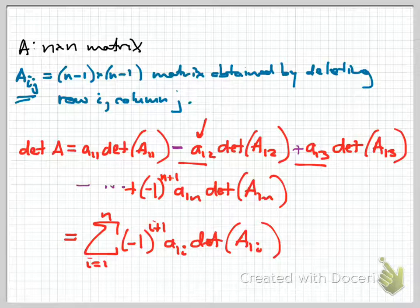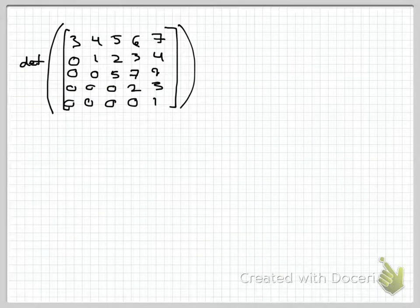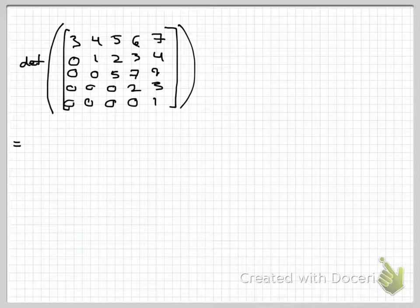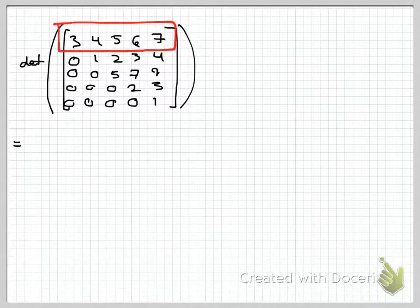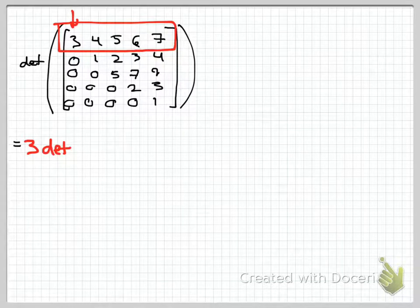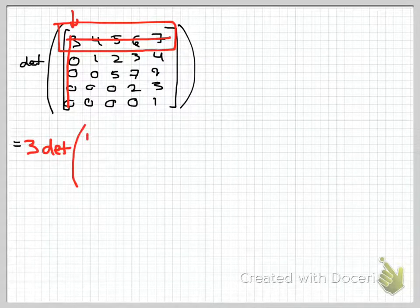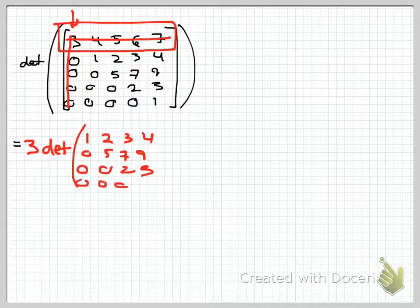Let's put this into practice. I have a 5 by 5 set up here, and we're just going to begin to walk through the process. How is the determinant going to go here? I'm going to key in on this top row. I'll start by looking at the 1,1 entry: this will be 3 times the determinant of the matrix I get when I eliminate the row and column in which that 1,1 entry sits. That 4 by 4 left over is: 1, 2, 3, 4, 0, 5, 7, 9, 0, 0, 2, 3, 0, 0, 0, 1. If I were to proceed and calculate that 4 by 4 determinant, it would require taking four 3 by 3 determinants, each of which requires three 2 by 2 determinants — the work is really stacking up.